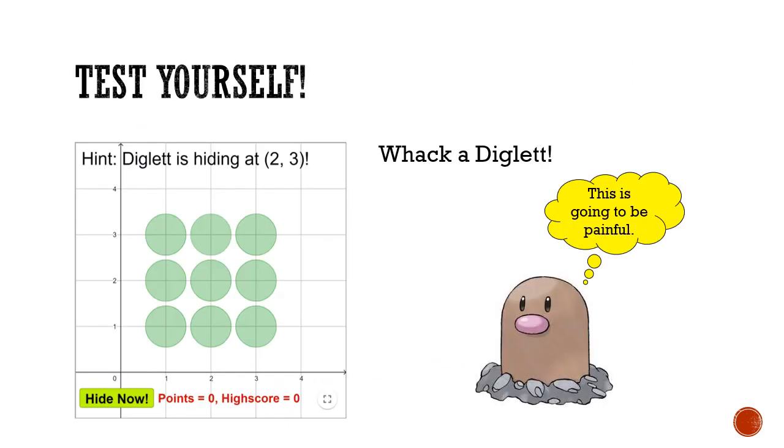Now, you can check your understanding of plotting points on a Cartesian coordinate system by playing this little game I've coded and titled Whack a Diglett. A link can be found in the info section below. Basically, you'll need to find the diglett hiding by the given coordinates and just click on the green circle where he's hiding. You can play this on your own and try to score 25 points, or play against a friend and see who can score higher within a time limit.